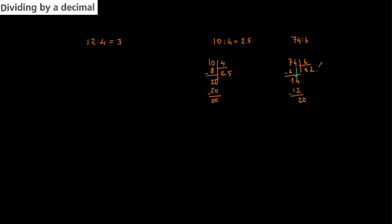In 20 we have 3 times 6, which equals 18. Subtracting gives us 2 again. We can add one more zero — no need to add another decimal point. In 20 again, 3 times 6 equals 18, remainder 2. As you can see, this is going to be a loop that continues infinitely. This is called a repeating decimal.